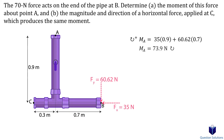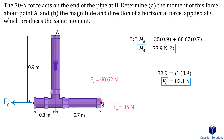The next part of our question asks us to find another force that would create the same moment. If we apply a horizontal force at point C, we can create a moment about point A. The perpendicular distance would be 0.9 meters. Solving for the force, this tells us that if we apply an 82.1-newton force at point C horizontally, it will create the same moment about point A.